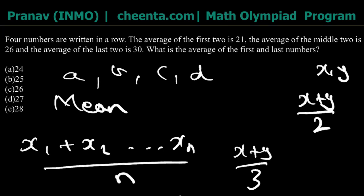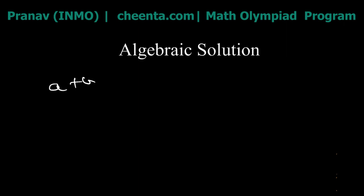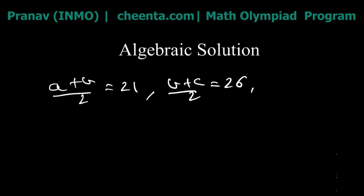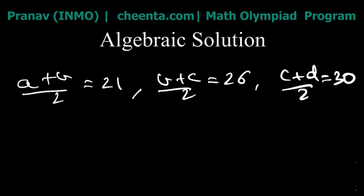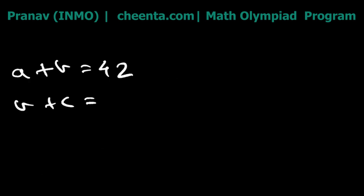They've told us the average of the first two numbers is 21, and we assume those are a and b, so (a + b) / 2 = 21. The average of the middle two is 26, so (b + c) / 2 = 26. The average of the last two, c and d, is 30, so (c + d) / 2 = 30. Multiplying both sides of each equation by 2 gives us: a + b = 42, b + c = 52, and c + d = 60.